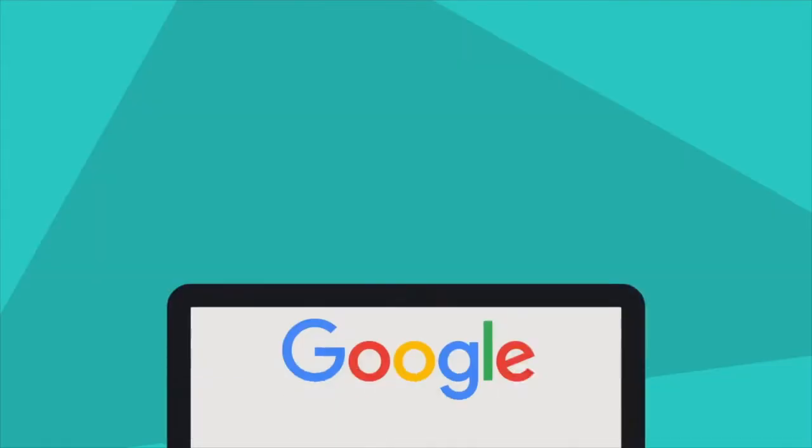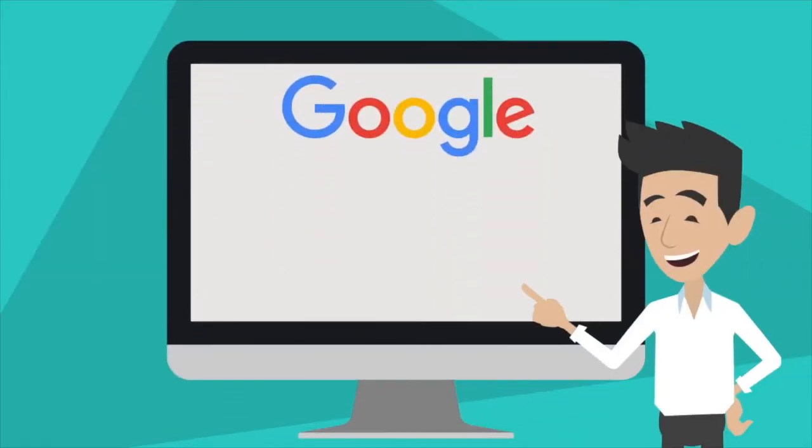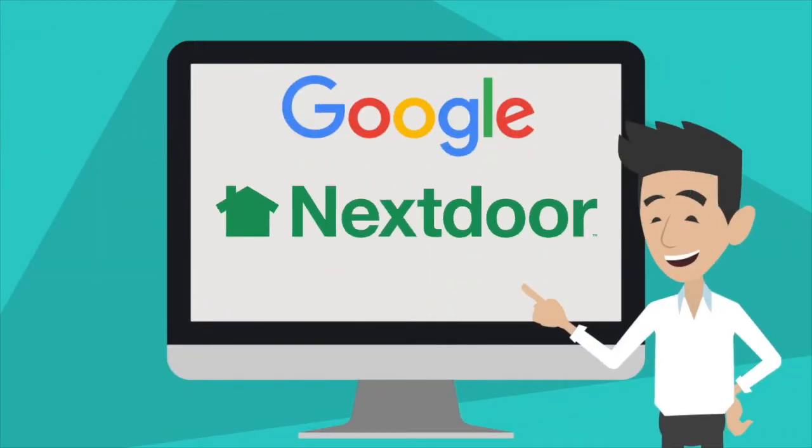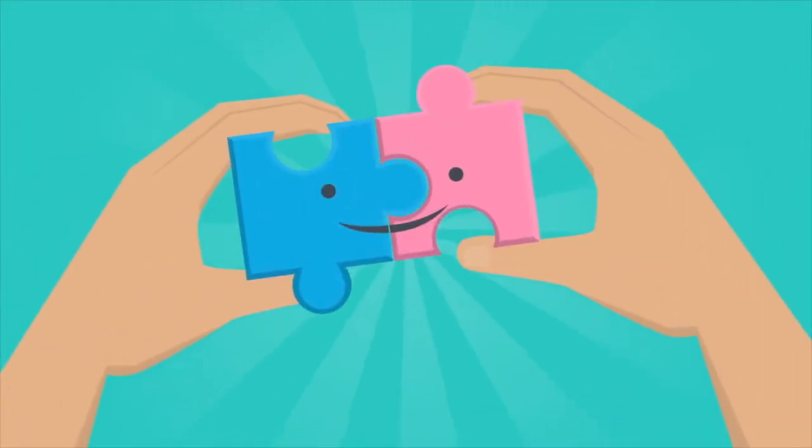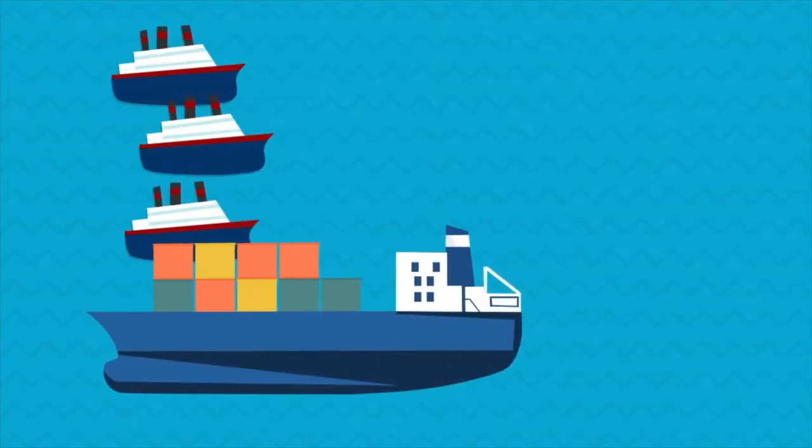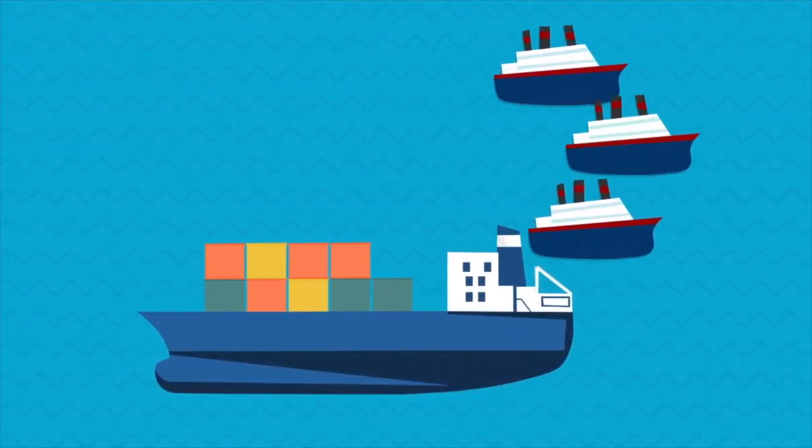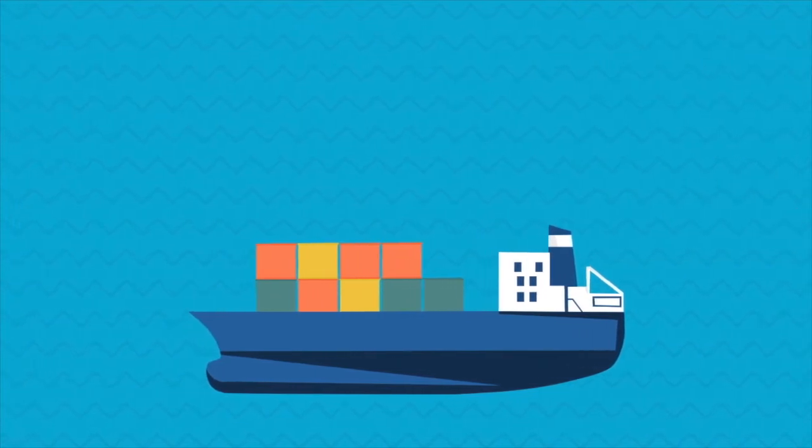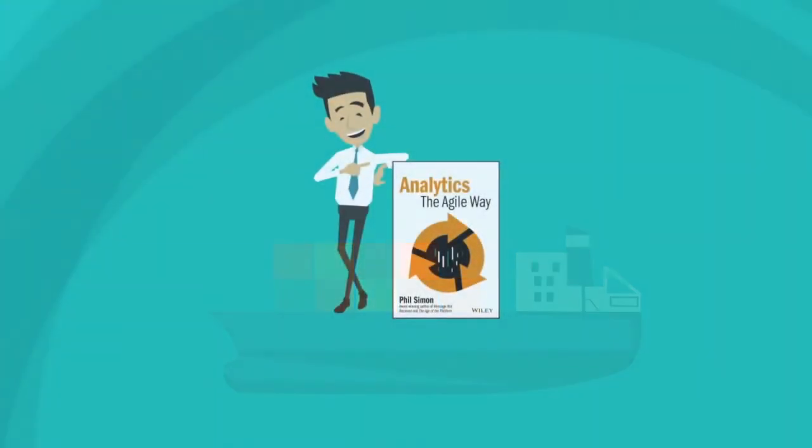Analytics, the Agile Way demonstrates how progressive organizations such as Google, Nextdoor, and others approach analytics in a fundamentally different way. They are applying the same agile techniques that software developers have employed for years. They have replaced large batches in favor of smaller ones, and their results will astonish you.